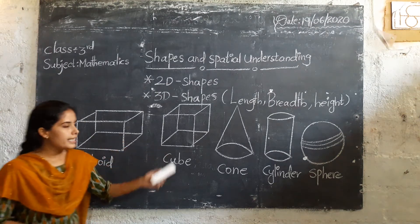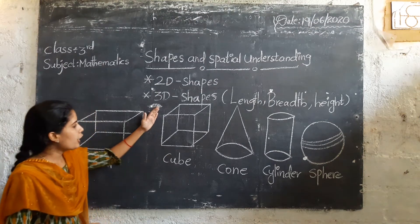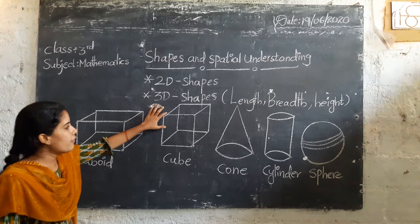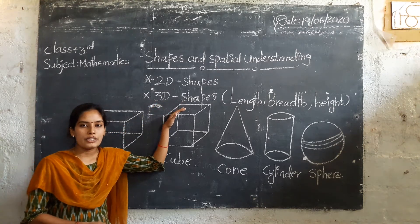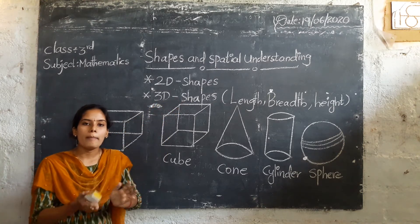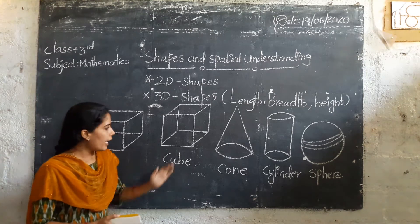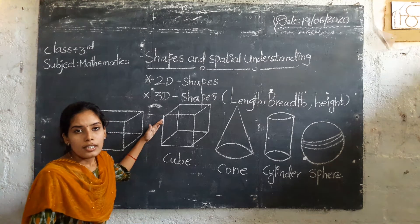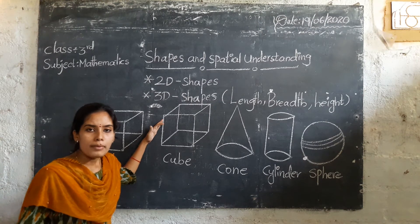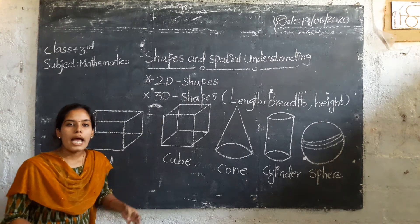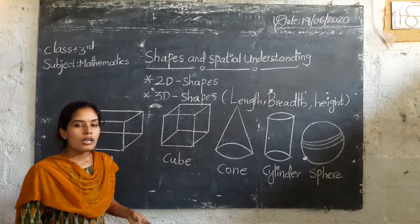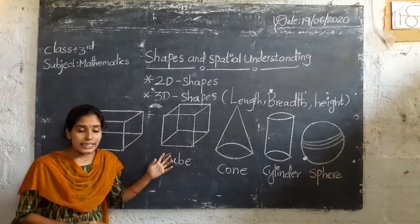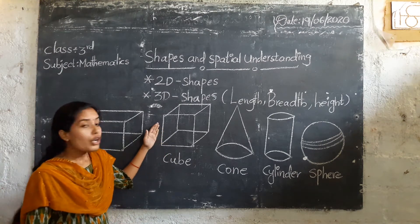And the next one is cube. How to frame the cube? Here we are using two squares. Two squares form a cube. Can you say the examples of cube? Where we are observing cube? For example, ice cube, Rubik's cube, dice — which are in the shape of a cube.